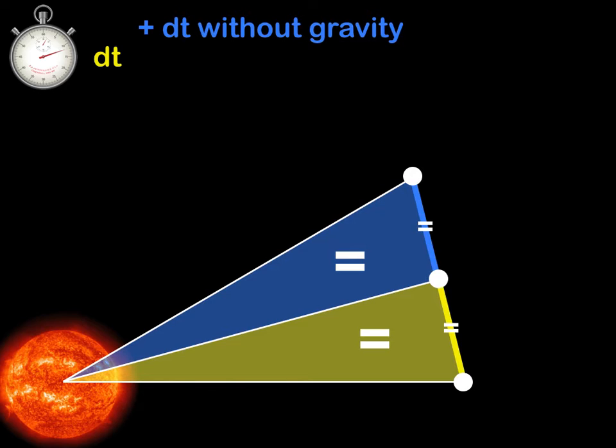Furthermore, they have the same height, which is the perpendicular height from the base up to the top, which is the sun. So they clearly have the same area. That's Kepler's law, which would be true if there was no gravity. What if there is gravity then? Let's see what happens.